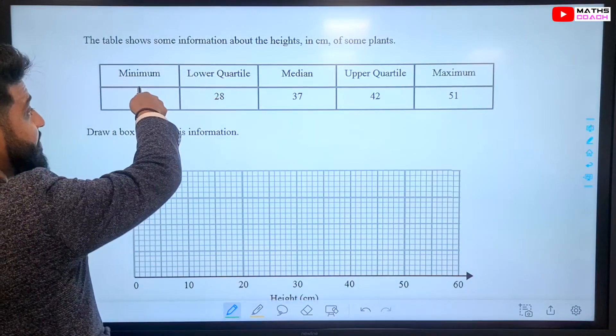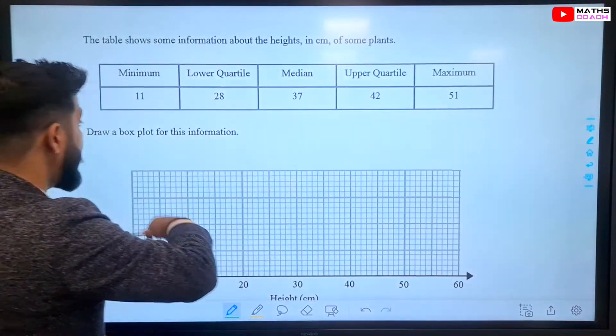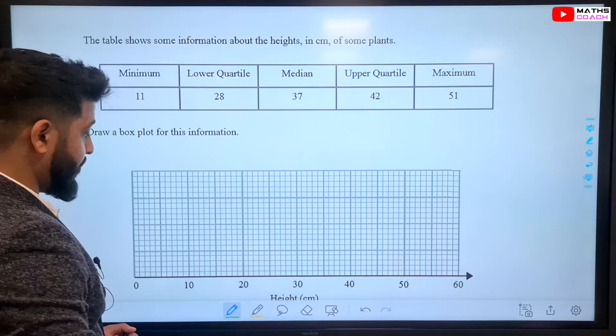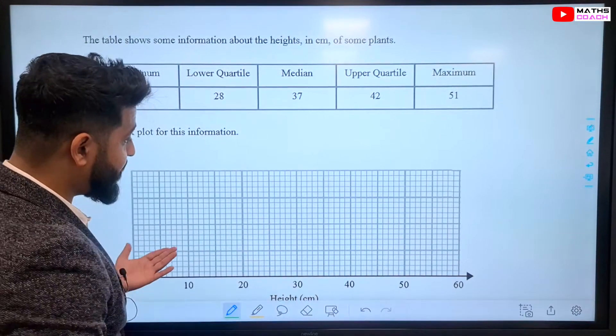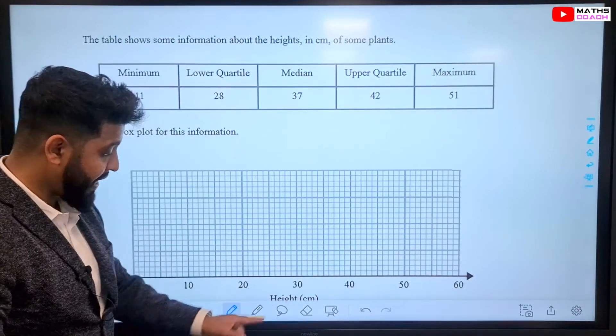our minimum value, and our maximum value. And we want to draw a box plot for this information. And we've already been given our graph with our scale of our heights.